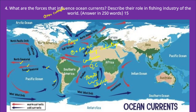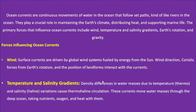When writing the answer, first define ocean currents, then write the forces that influence them, then address their role in the fishing industry, and conclude with their overall significance or threats from global warming and climate change — this frames a holistic answer. Ocean currents are a continuous movement or circulation of ocean water with a defined path, flowing like rivers in the ocean. They play a key role in maintaining Earth's climate, distributing heat, and supporting marine life.